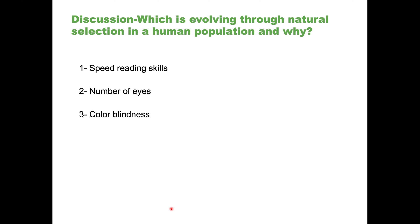Here's a discussion question: among the characteristics present in a human population — speed reading skills, number of eyes, and color blindness — which of these variations do you think will allow a human population to evolve?